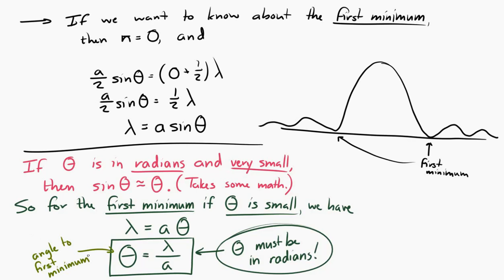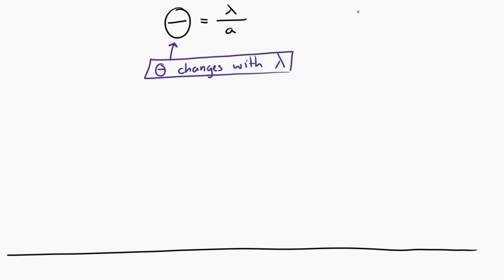Now, also notice, this is a little strange, but the location of the first minimum changes with the wavelength. It also changes with the aperture width. But right now, let's think about the wavelength. So every color of light has a different wavelength. So red has a larger wavelength than blue. So if we were to send blue light and red light through an aperture, we would get different patterns for the blue light and for the red light.